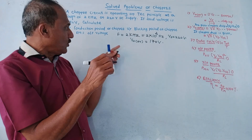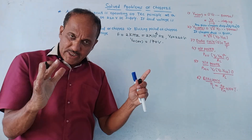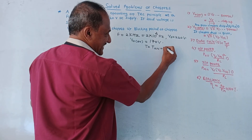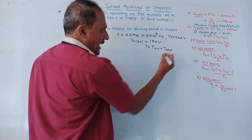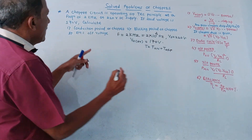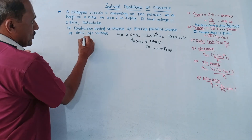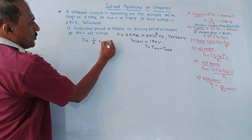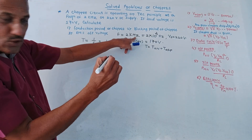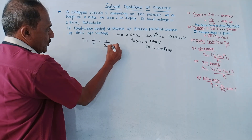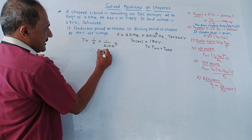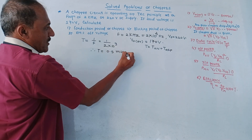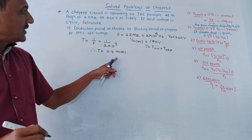First we will calculate the value of total time period. Total time period T is Ton plus Toff. Since frequency is given, we use T equals 1 by F, which is 1 by (2 into 10 raise to 3). Therefore T equals 0.5 into 10 raise to minus 3, that is 0.5 milliseconds.